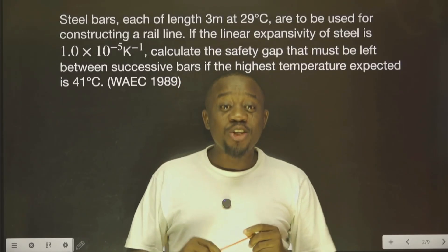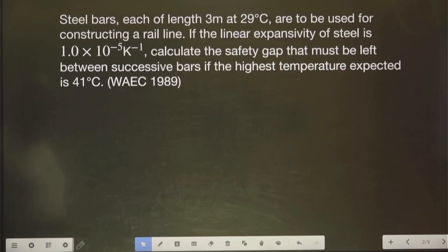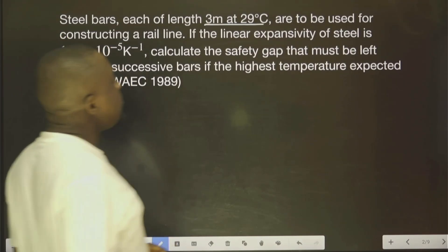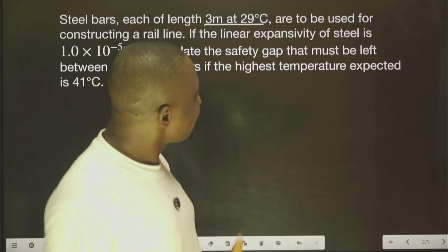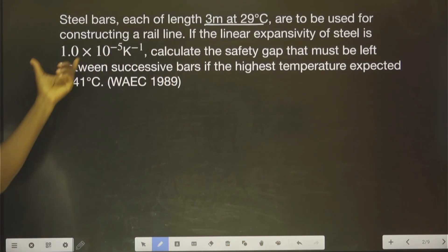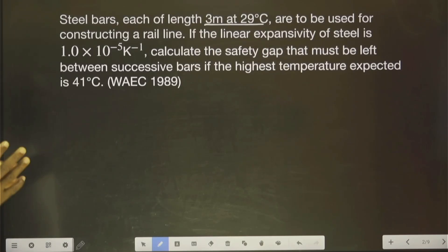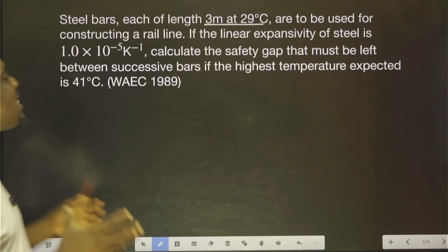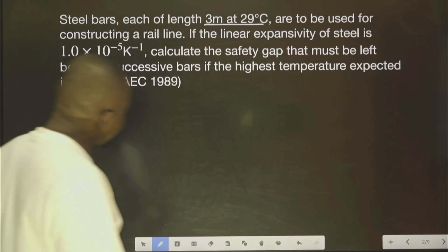This question is on linear expansivity. Steel bars each of length 3 meters at 29 degrees centigrade are to be used for constructing a rail line. If the linear expansivity of steel is 1.0 × 10⁻⁵, calculate the safety gap that must be left between successive bars if the highest temperature expected is 41 degrees centigrade.